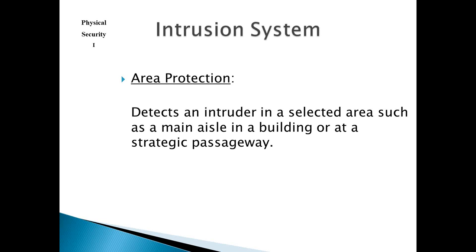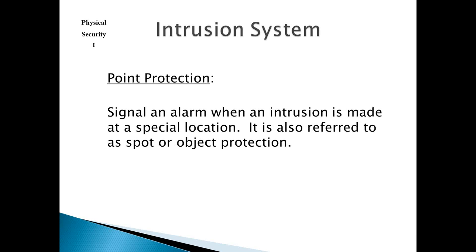Area protection detects an intruder in a selected area such as a main aisle in a building or in a strategic passageway. You can set up an alarm in a sensitive area like a SCIF so that unauthorized access to the SCIF — you'll know that somebody's in there. Point detection signals an alarm when an intrusion is made to a special location. It is also referred to as spot or object protection, as with the safe or a SCIF.